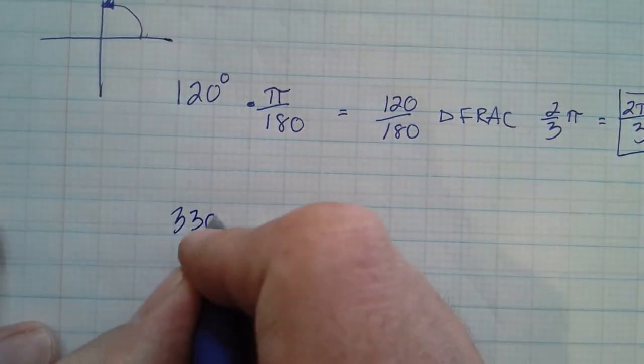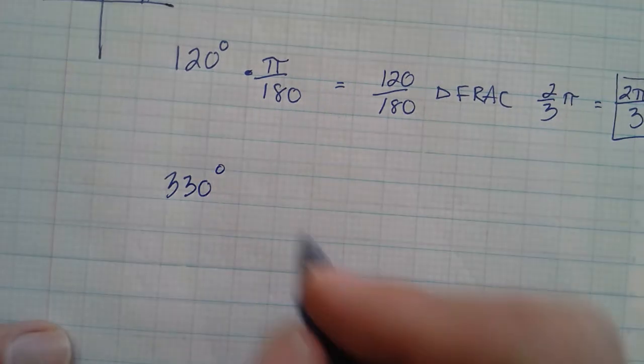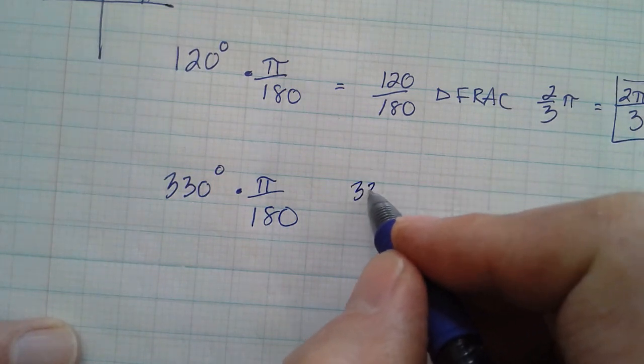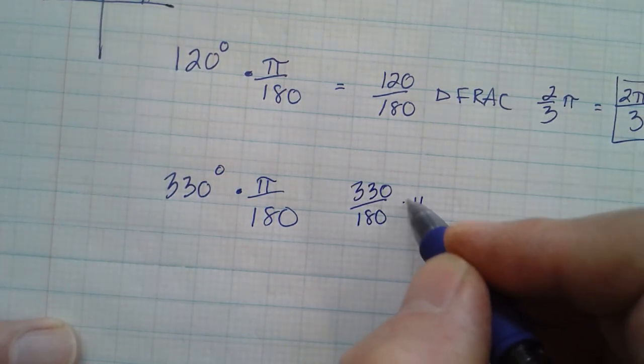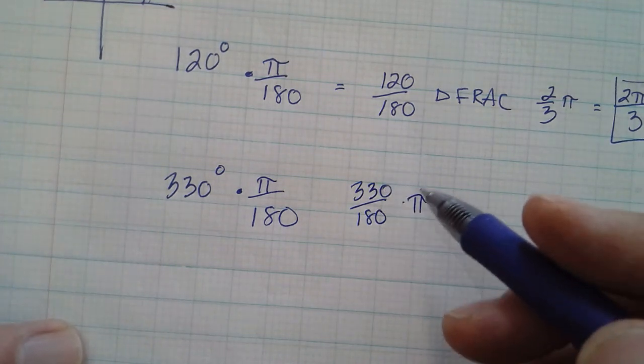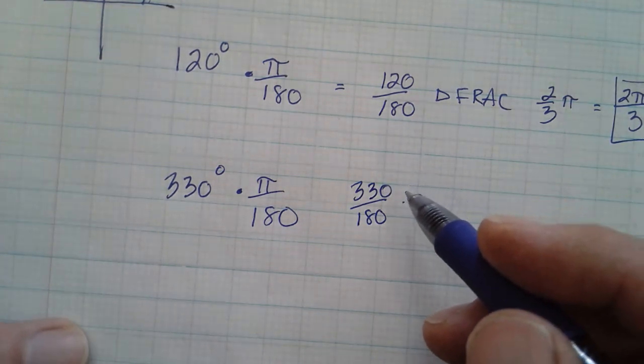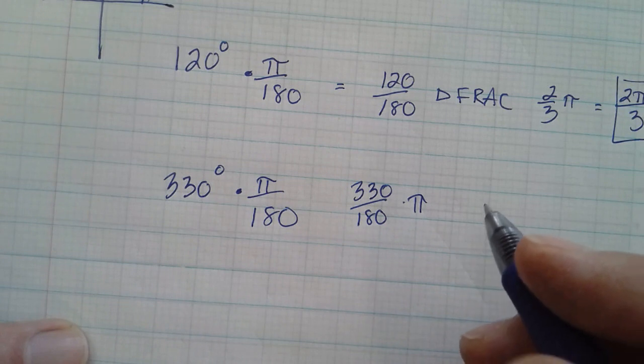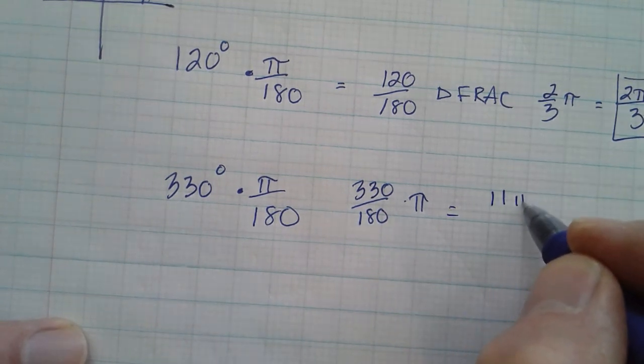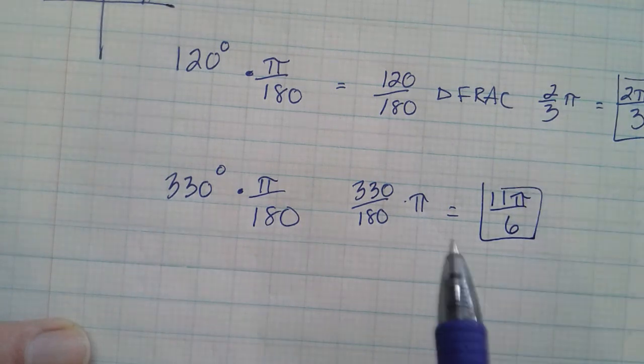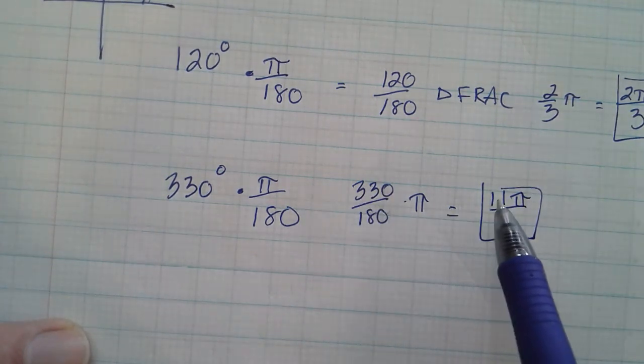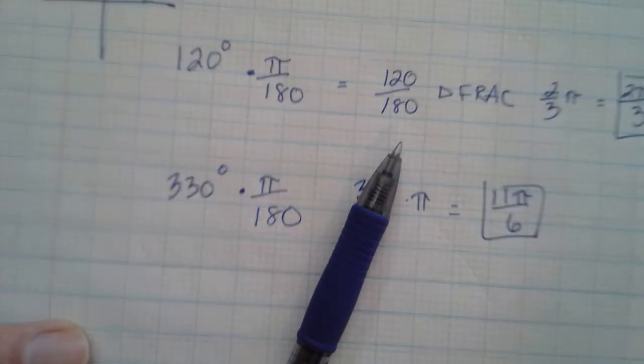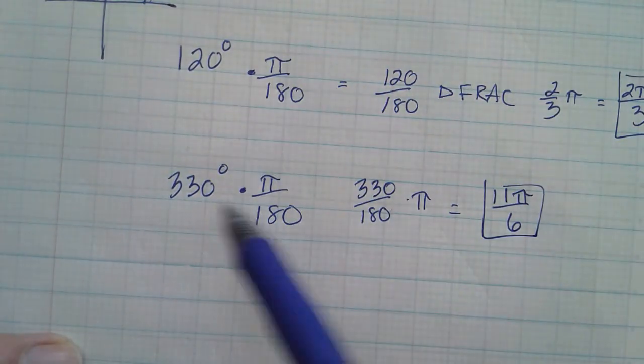So just another example, 330 degrees. If we wanted to convert it to radians, you'd multiply by π over 180. So it's 330 over 180 π. So let's see, 330, that is 11 twelfths. So 3 goes in there 11 times, I'm sorry, 11 sixths. So it'd be 11π over 6. Okay, so this is 11 sixths on your calculator, and then you can just make it 11π over 6. Okay, so that's converting degrees to radians.